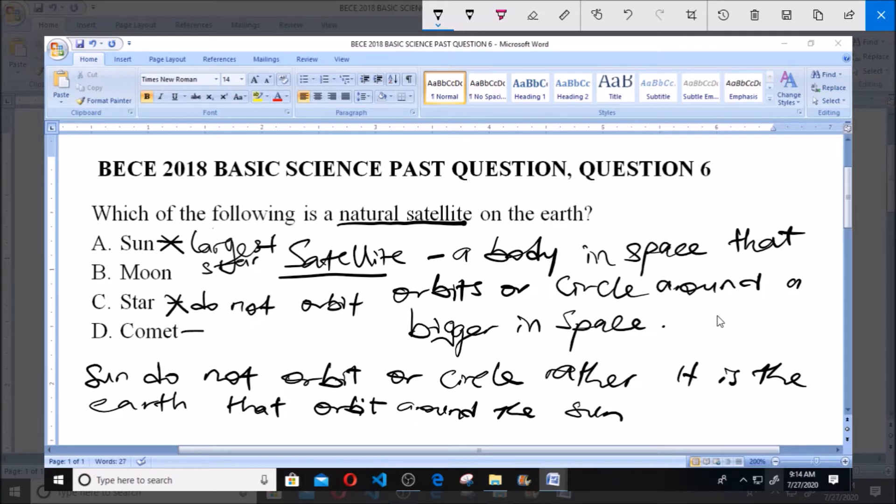And D here says comet. Now a comet is an icy, small solar body system.